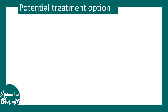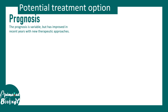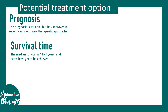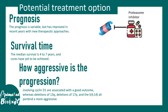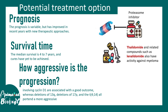Prognosis is variable for multiple myeloma, with new therapeutic approaches in recent years. Survival time is typically 4 to 7 years after diagnosis with treatment. Prognosis depends on the genetic association — cyclin D involvement is associated with good outcome, whereas deletions of 13q or 17p regions are more aggressive. Recent studies have found that proteasome inhibitors, thalidomide and its related compounds, and bisphosphonates are important therapeutic agents for treatment of multiple myeloma.